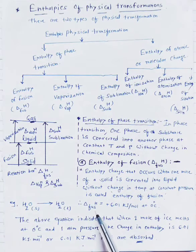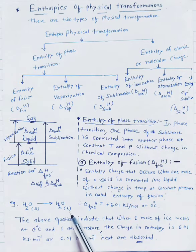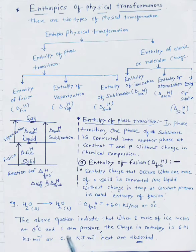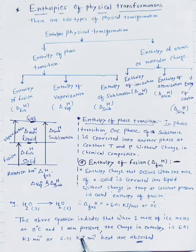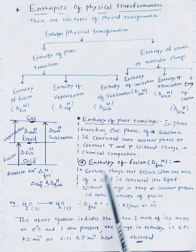For example, H2O solid — that is ice — converts into H2O liquid. The enthalpy of fusion is plus 6.01 kJ per mole at 0 degrees Celsius. The positive sign indicates that heat is absorbed in this process. The solid converts into liquid, and that is called enthalpy of fusion.